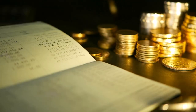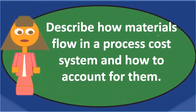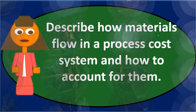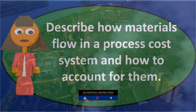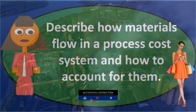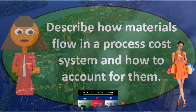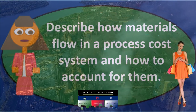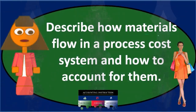For indirect materials — those that can't be tracked directly to the process — we would debit Indirect Materials and credit Accounts Payable when purchased. This keeps direct and indirect materials tracked separately in their respective accounts.